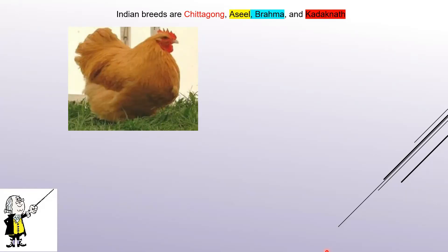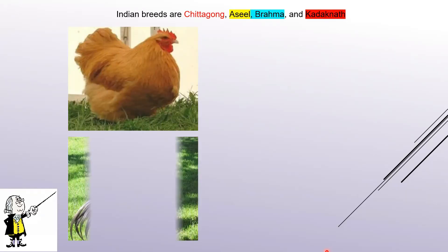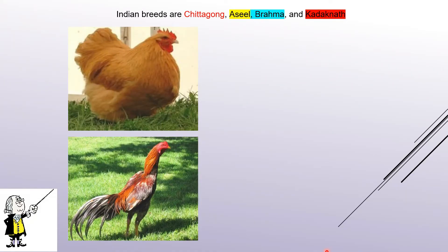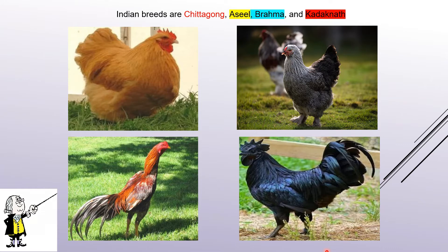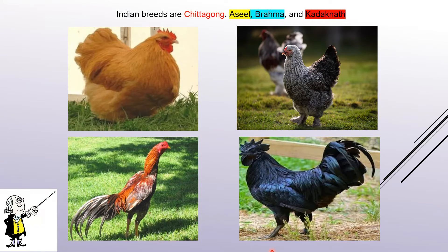Indian breeds are Chittagong, Asil, Brahma, and Kadaknath. Kadaknath is a very common breed that you can easily identify. These names are important, so keep them in mind.